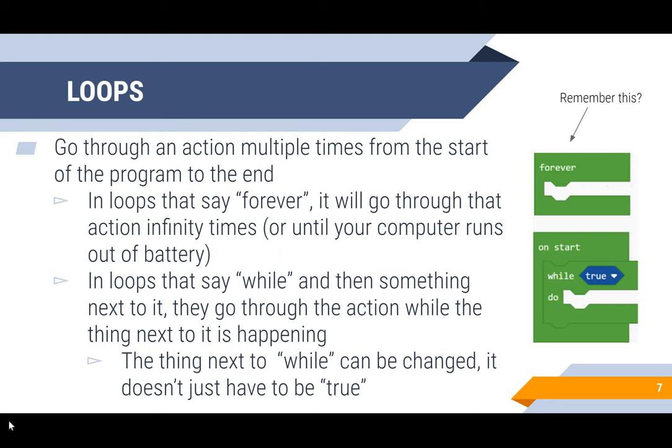The next type of coding block that we're going to talk about is loops, which are a little more complicated. Loops basically go through an action multiple times from the start of the program to the end. In loops that say forever, it will go through that action infinity times, or until your computer eventually runs out of battery.